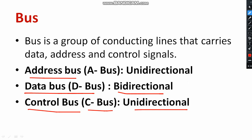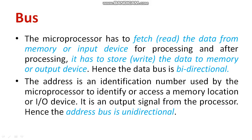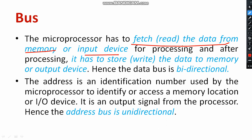Why is the data bus bidirectional? Because the microprocessor has to fetch data from memory or input devices for processing, and after processing it has to store data back to memory or an output device. Therefore, both read and write operations must be carried out, which is why the data bus is bidirectional. Why is the address bus unidirectional? Because the address is an identification number used by the microprocessor to access a memory location or I/O device — it is an output signal from the processor, so it only goes in one direction.